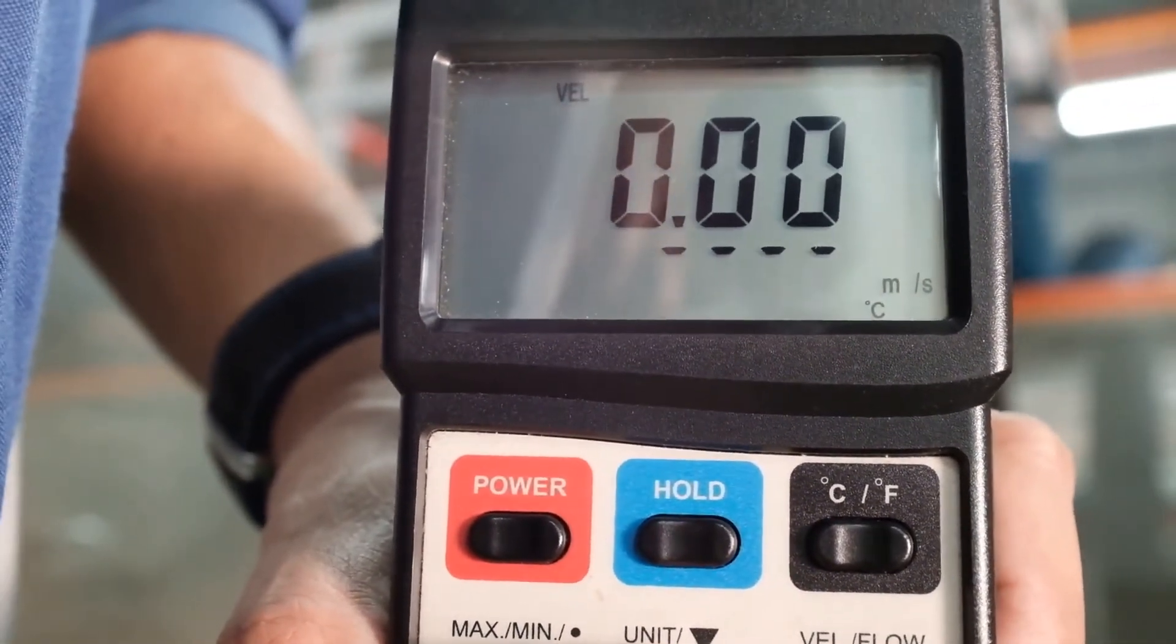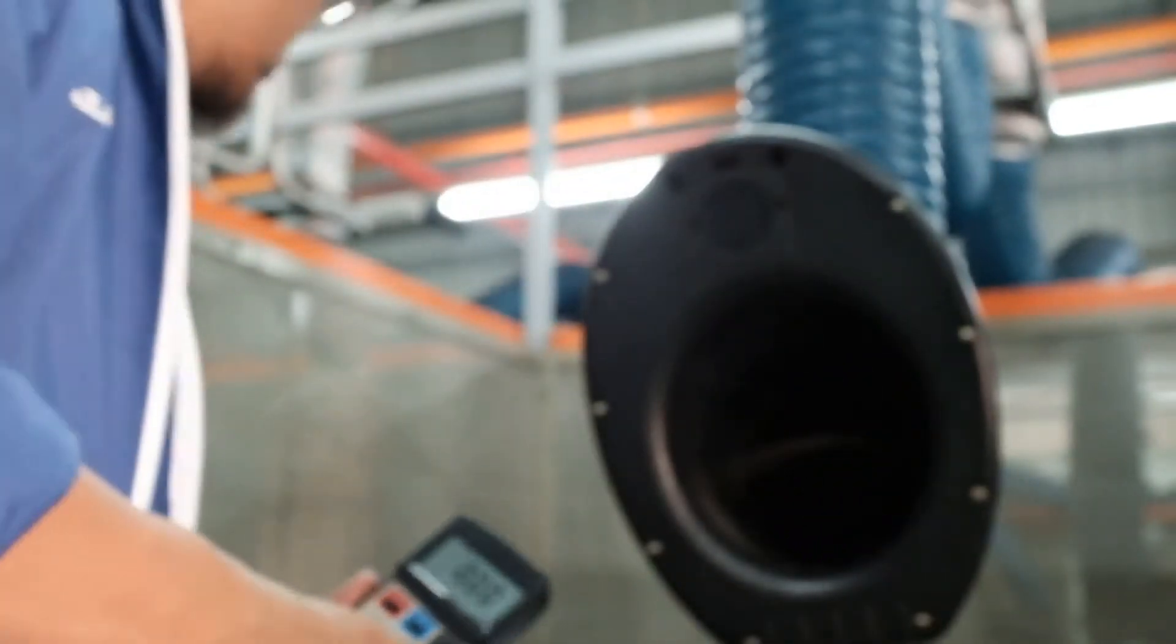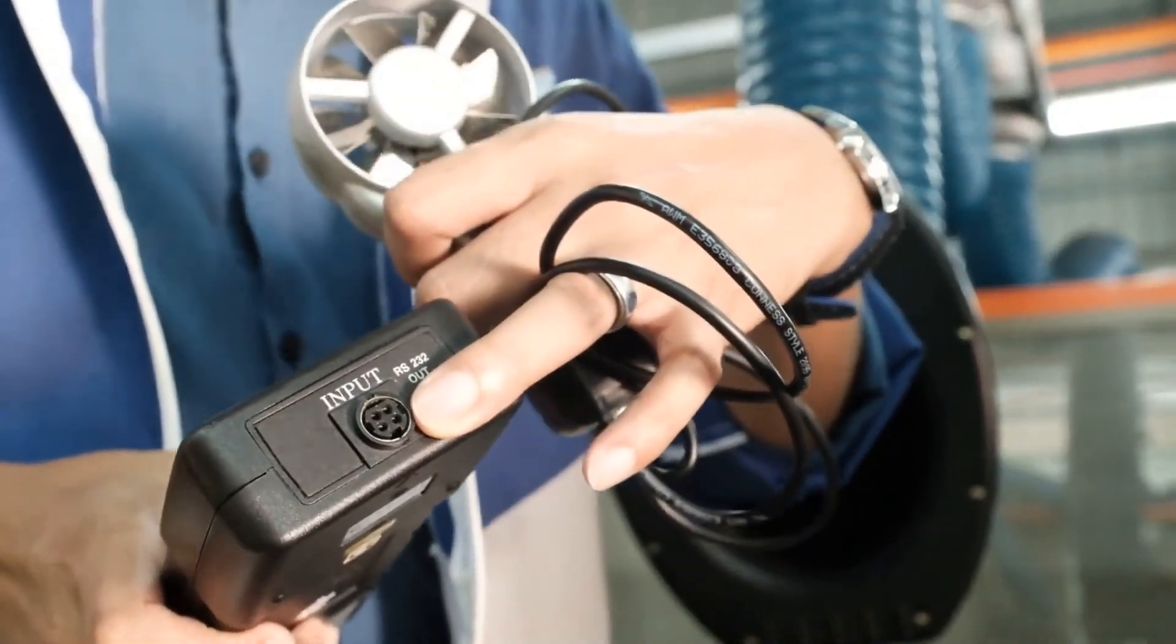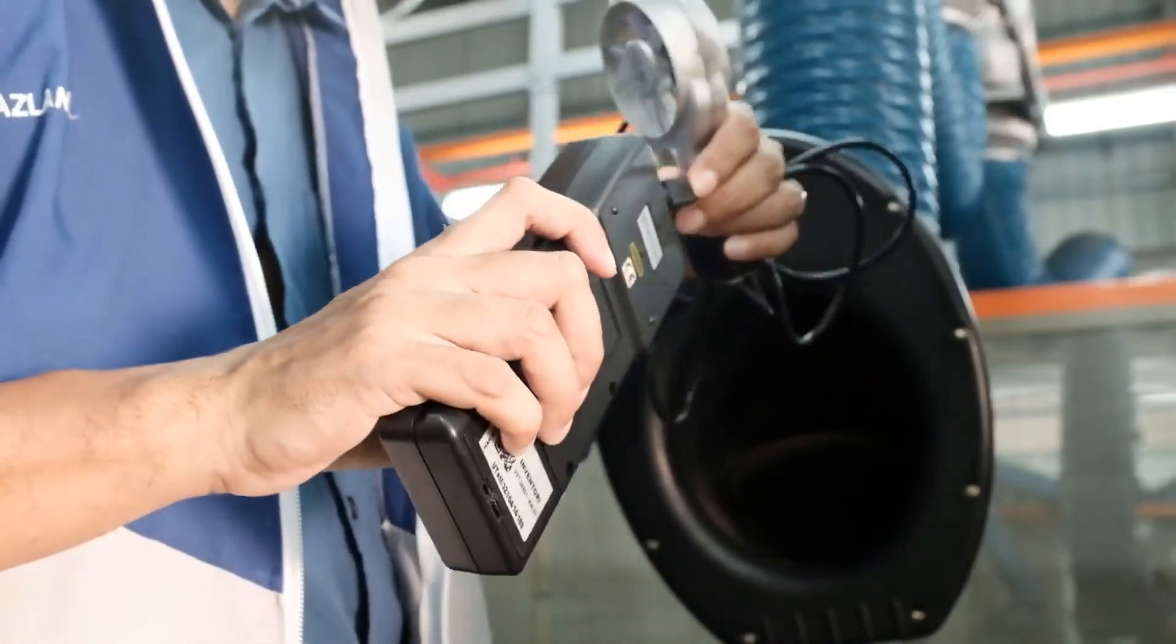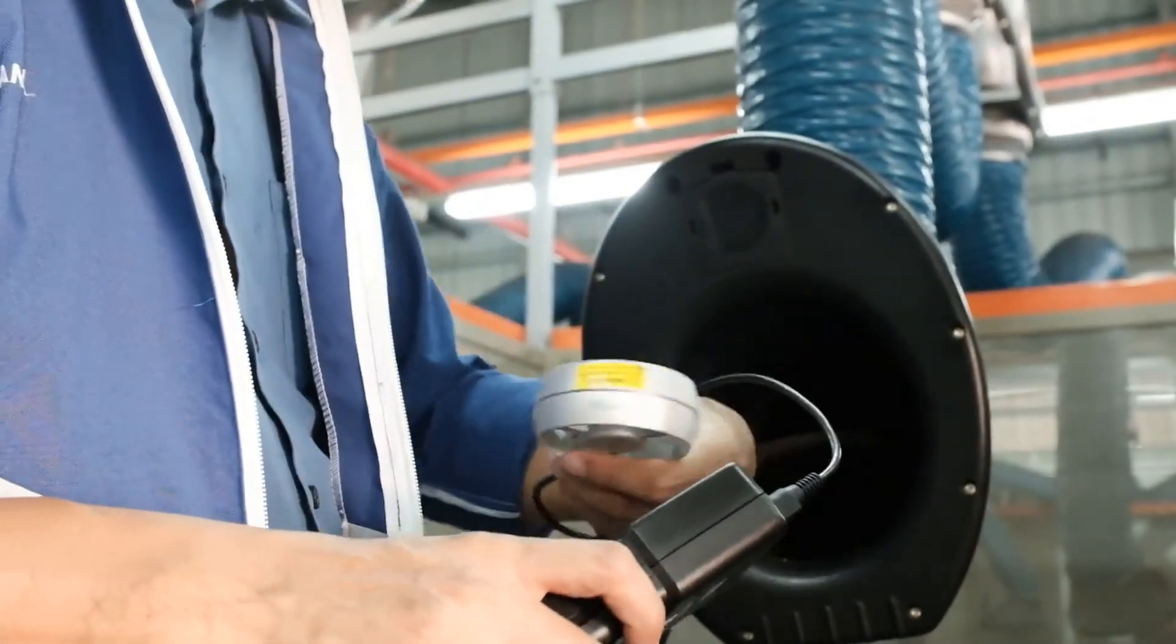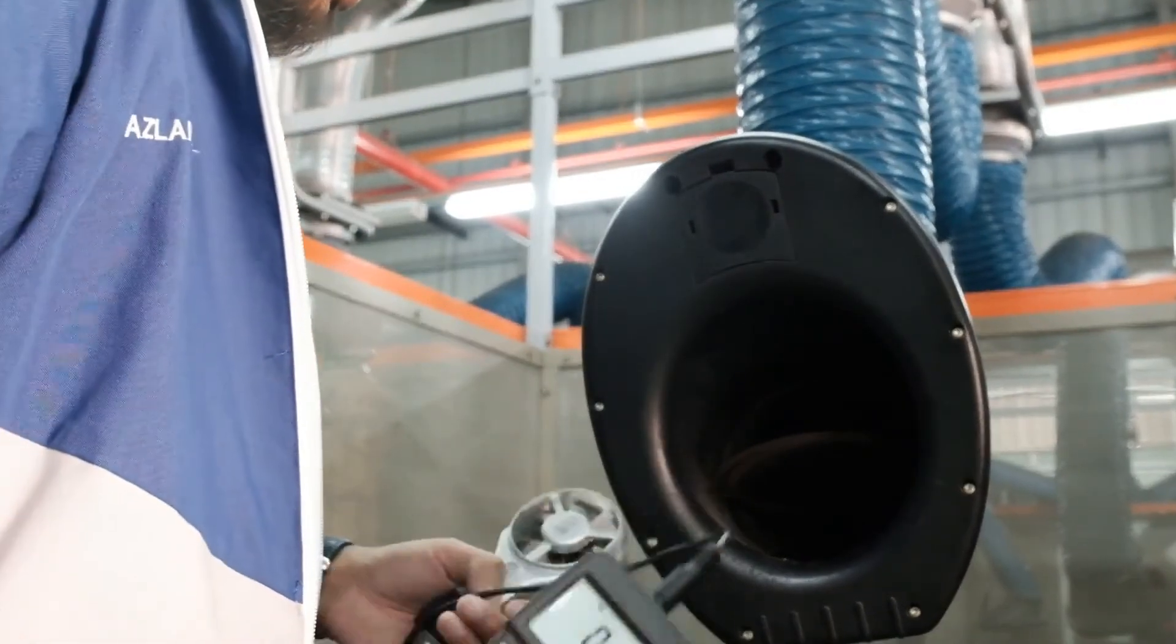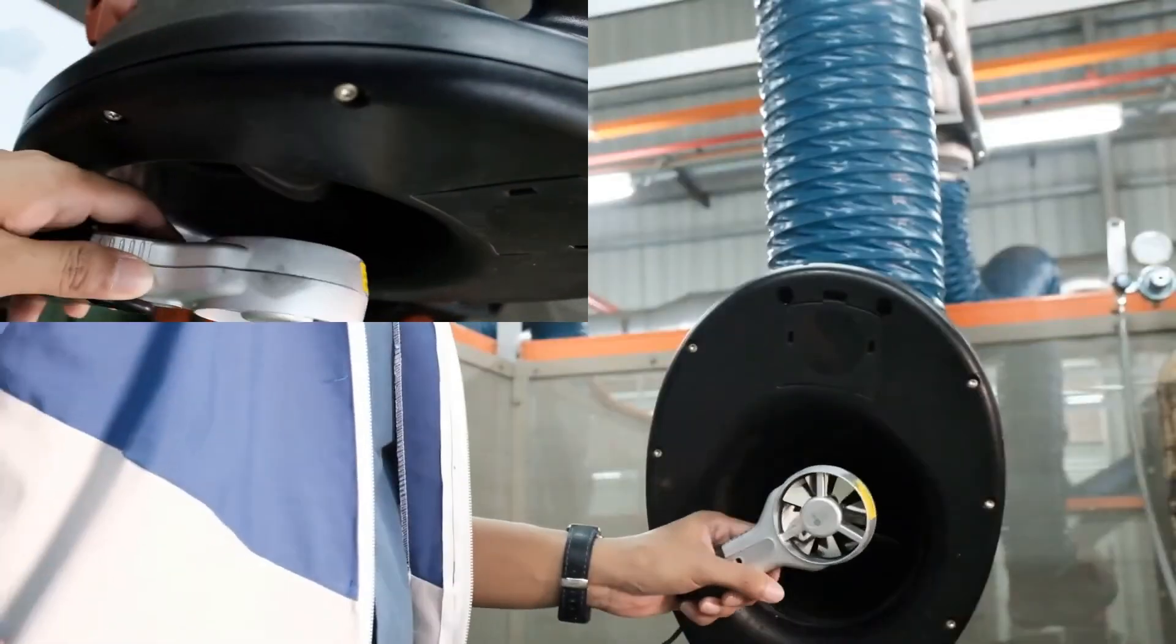The probe is kind of a remote from the main body for the ease of measurement. There is a cable connection between these two parts. Just connect the cable from the probe to the input terminal at the body. Now I'm going to show you how to practically use this instrument to measure the air velocity that goes into the LEV.